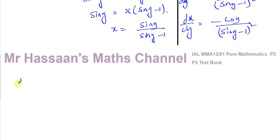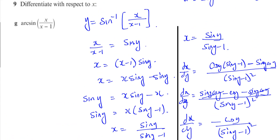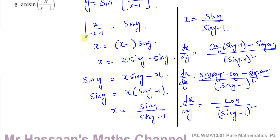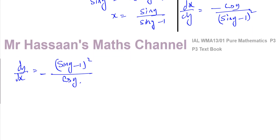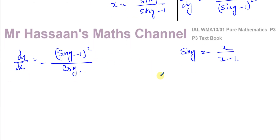What I need is dy/dx, which is the reciprocal of dx/dy: dy/dx equals (sine y minus 1) squared over minus cosine y. Now I want dy/dx in terms of x, not y. I know that sine y equals x over (x minus 1), so sine y minus 1 squared equals x over (x minus 1) minus 1, all squared.